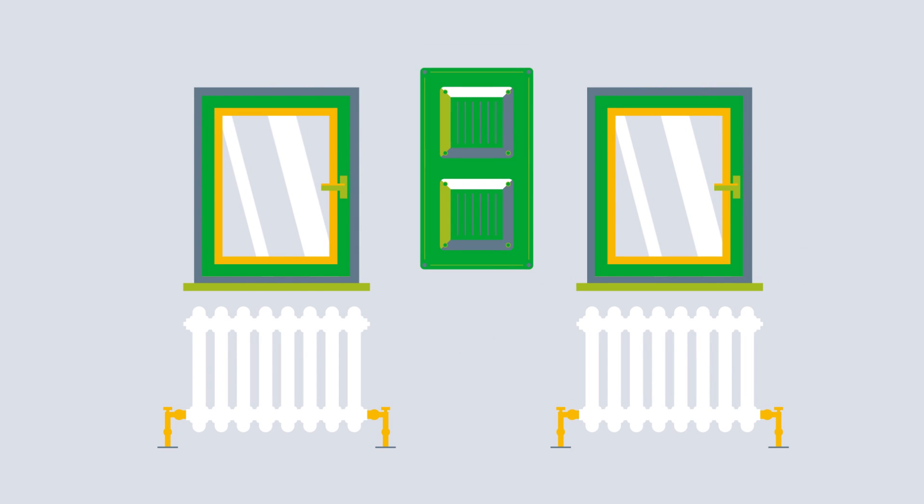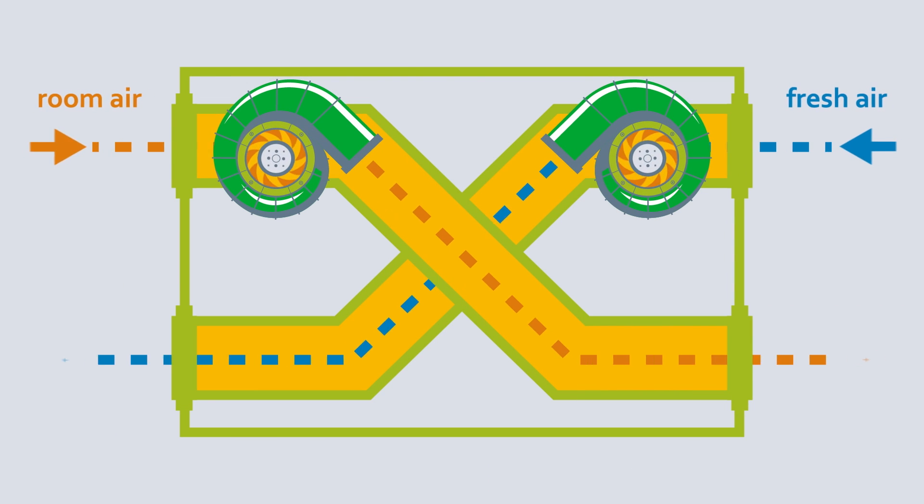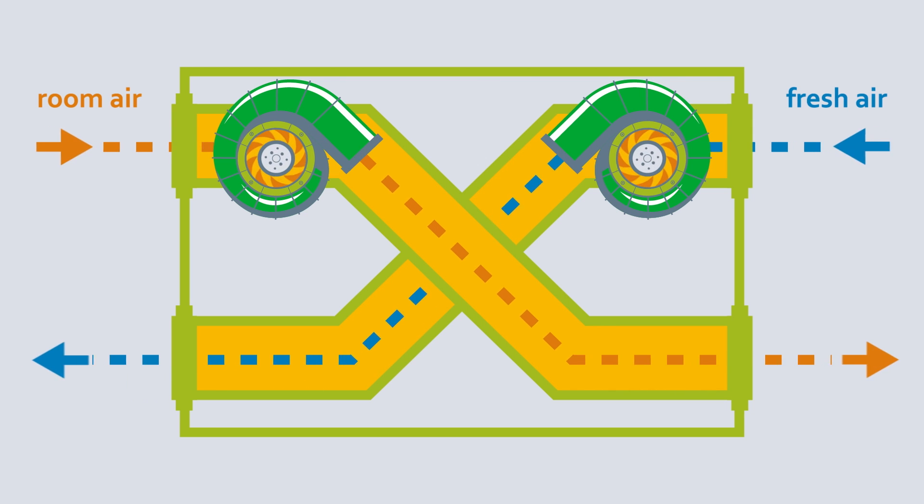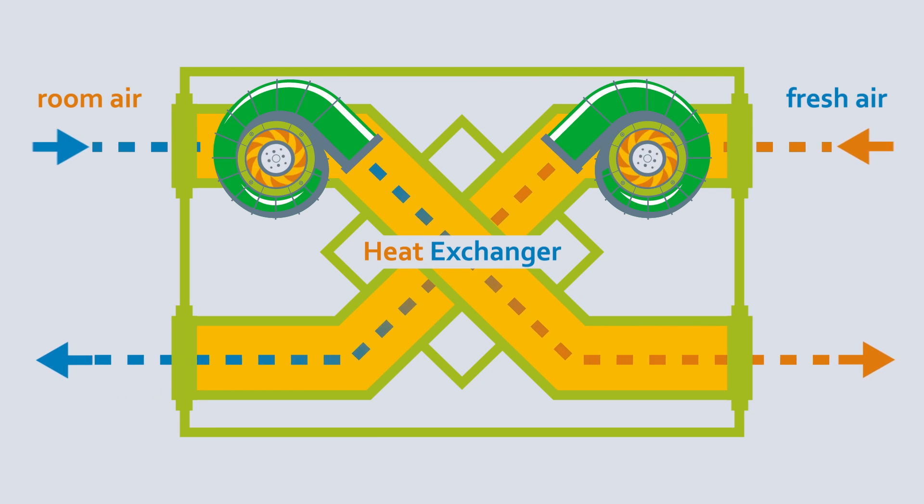Ventilation systems can help. They ensure that air is exchanged based on the requirements. To prevent heat losses, ventilation systems operate with heat exchangers.